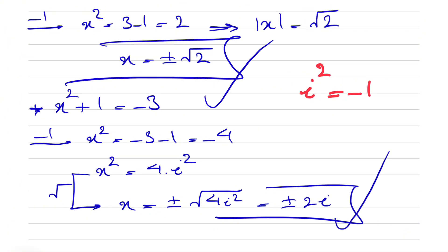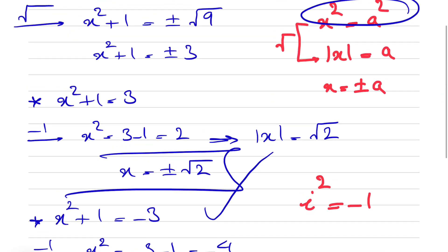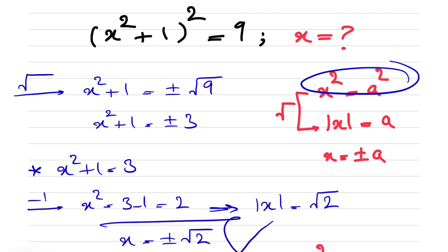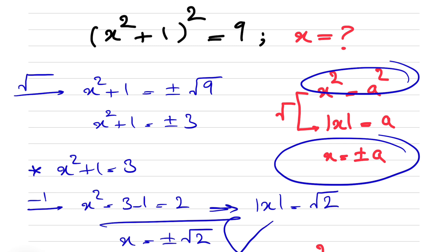That gives us four answers in total. The biggest takeaway is that when we have a perfect square equal to another perfect square and take the square root, we must treat it as an absolute value, meaning x = ± the square root of the other side. Take care and I'll see you in the next video!